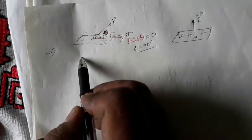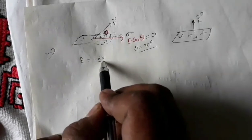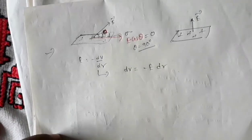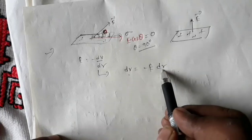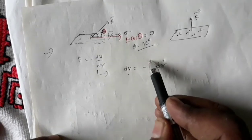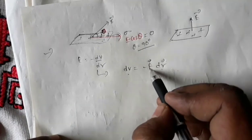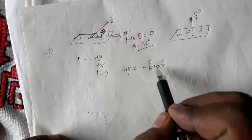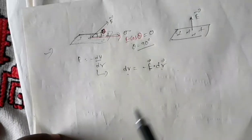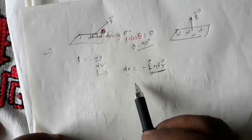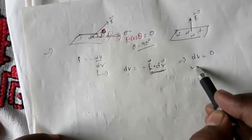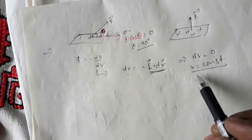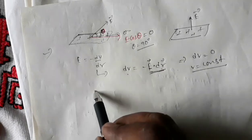Another feature following from this property: the relation between electric field and potential is E equals minus dV by dr, giving dV equals minus E dot dr. Since electric field intensity is perpendicular to the surface, the dot product E dot dr along the surface is zero. This implies dV equals zero, or V equals constant. So the surface of a charged conductor has equal potential at all points — the surface is equipotential.